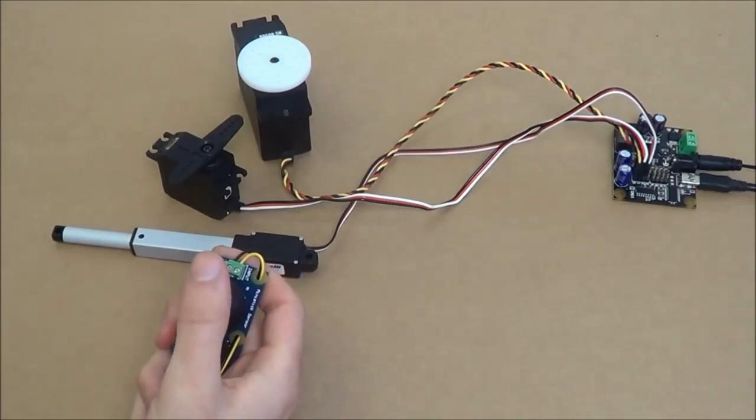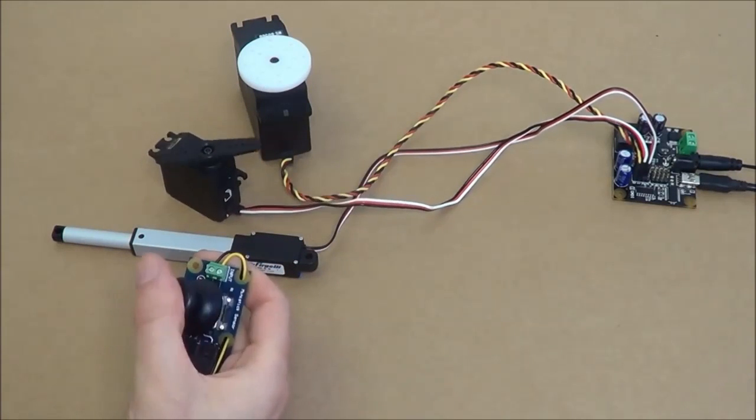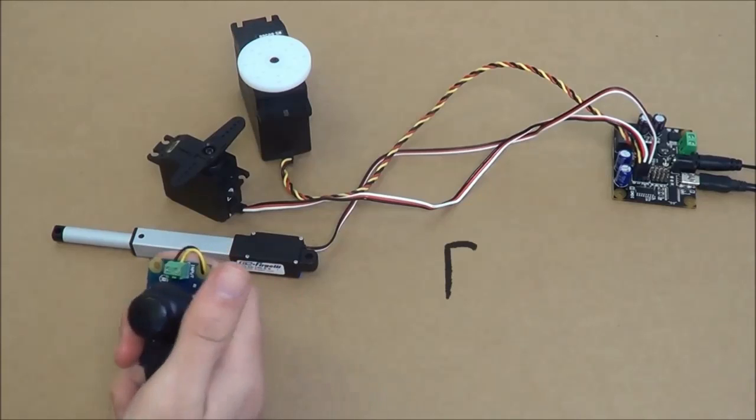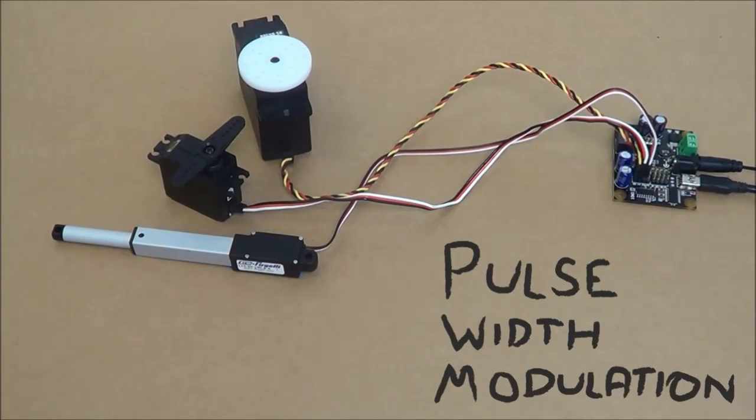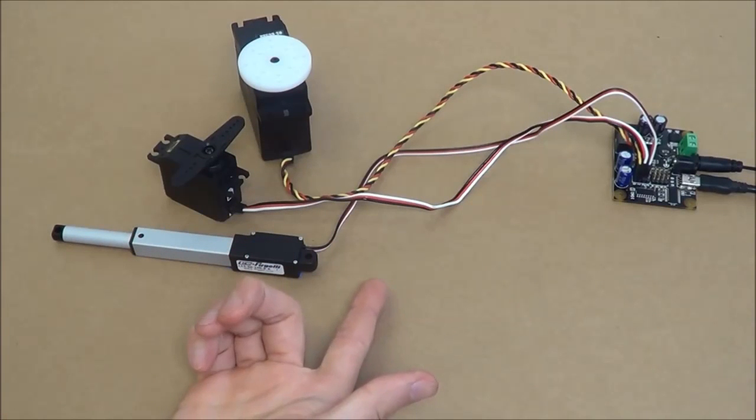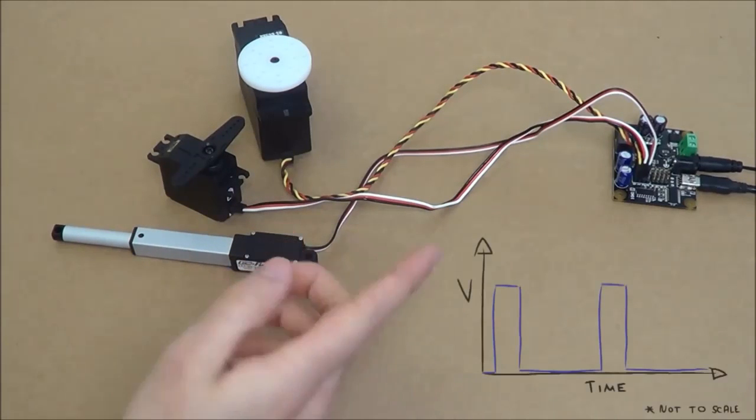So how does one go about controlling one of these spectacular little devices? Well, it's something called pulse width modulation, or PWM for short. And what exactly is PWM? It has everything to do with the width of a square wave voltage pulse.